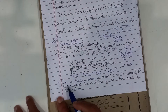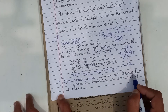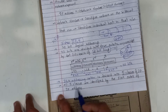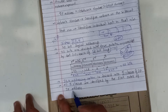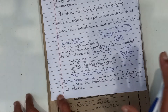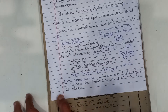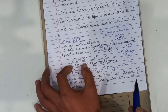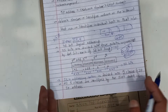The IPv4 addressing system is divided into 5 classes. All 5 classes are identified by the first octet of the IP address.